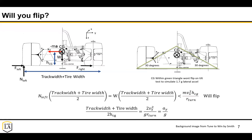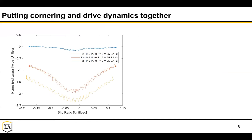This gives you some restrictions on CG height or requirements on track width if you're looking to hit certain lateral acceleration targets for your Baja or Formula vehicle. Let's put some of the cornering and drive dynamics together. This is again some data from the tire test consortium, which is invaluable. A lot of vehicle design should start with understanding your tires.